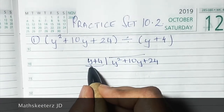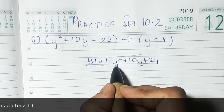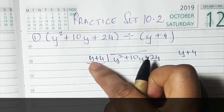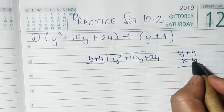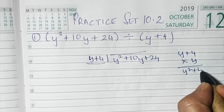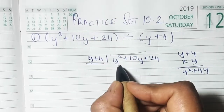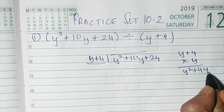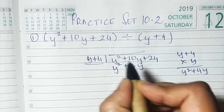Now the first term is y and here we have y², so there is a difference of one y. We multiply y + 4 by y because there's a difference of one y between the divisor and the dividend's first term. y into y is y², and 4 into y is 4y, so y × (y + 4) gives us y² + 4y.